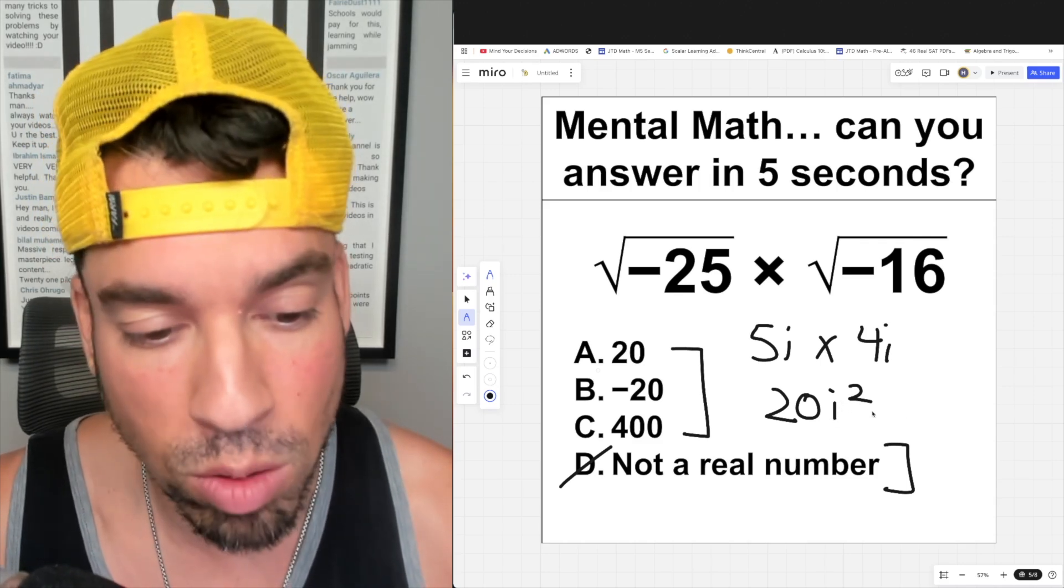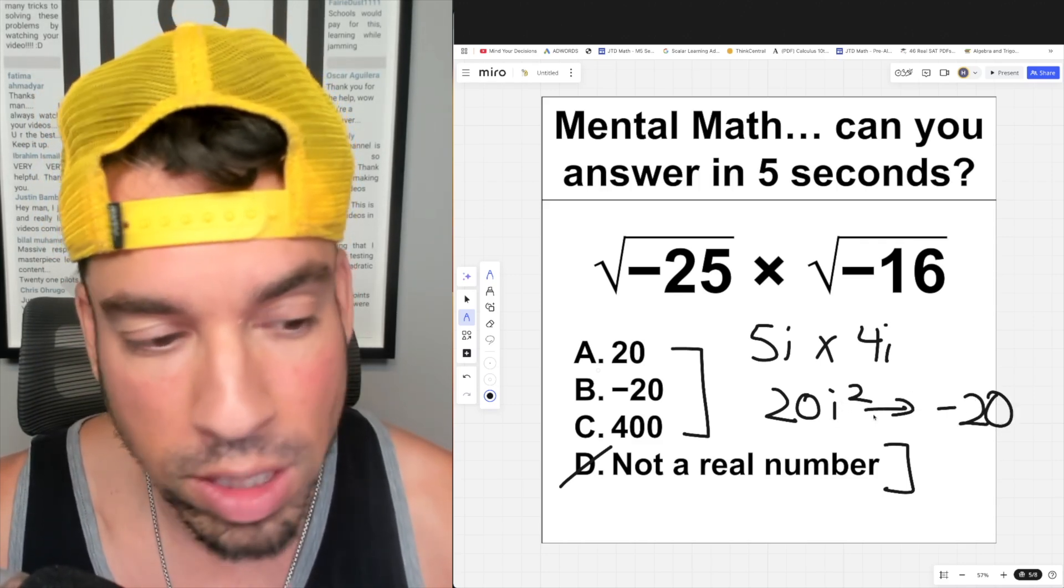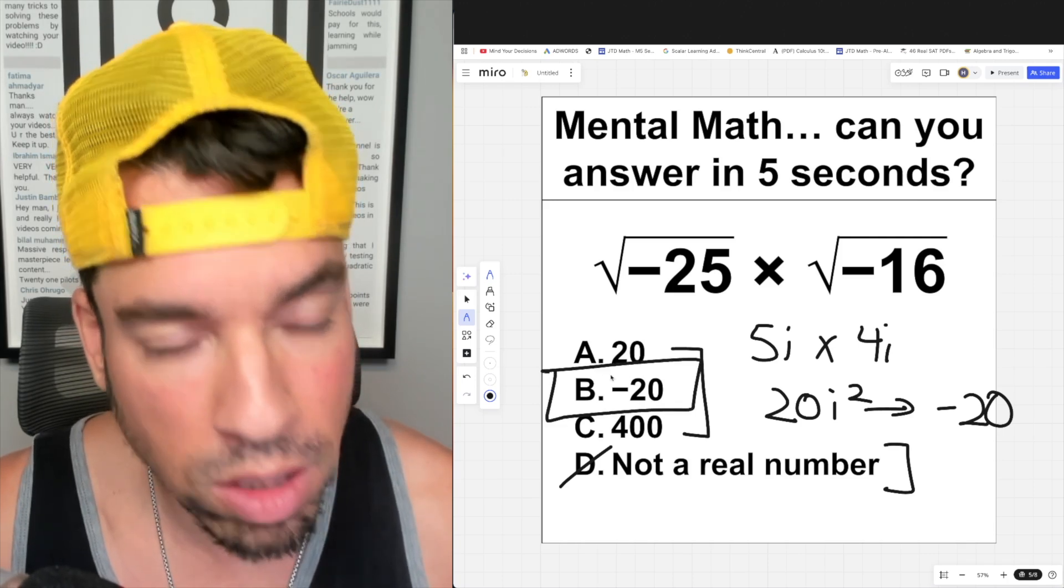Which means the final answer is negative 20. So B is the winner. That's how you do it, done.